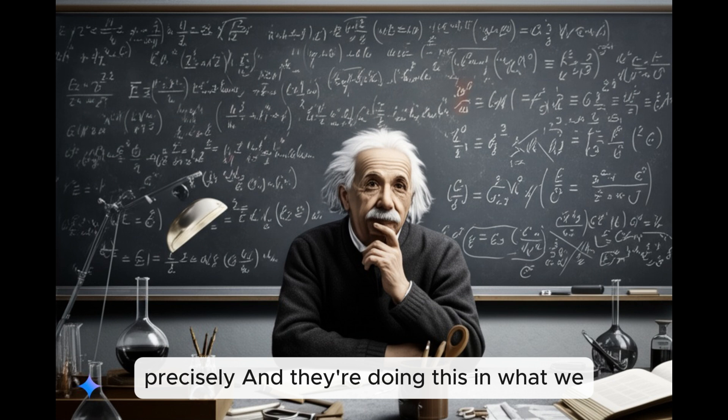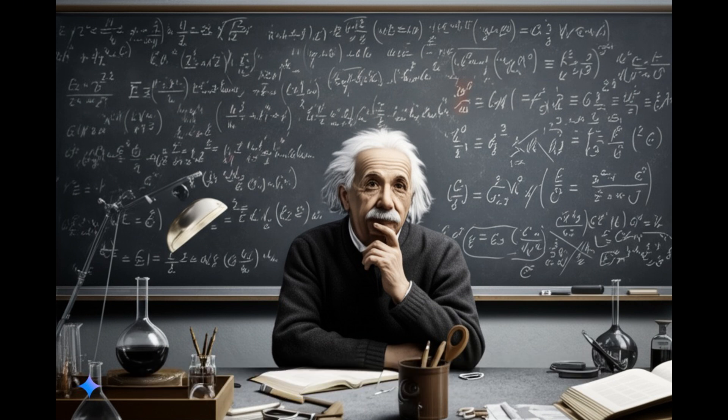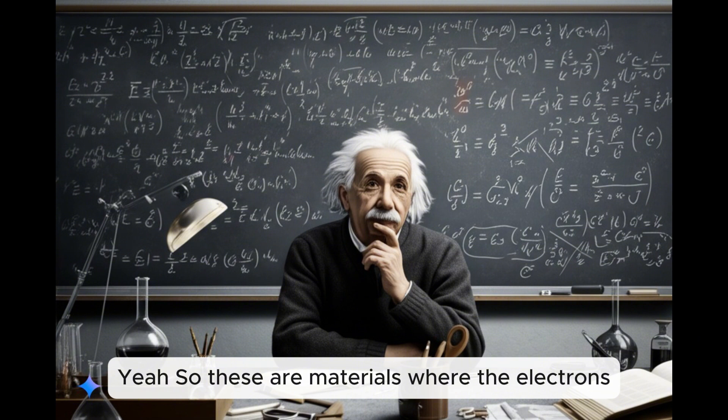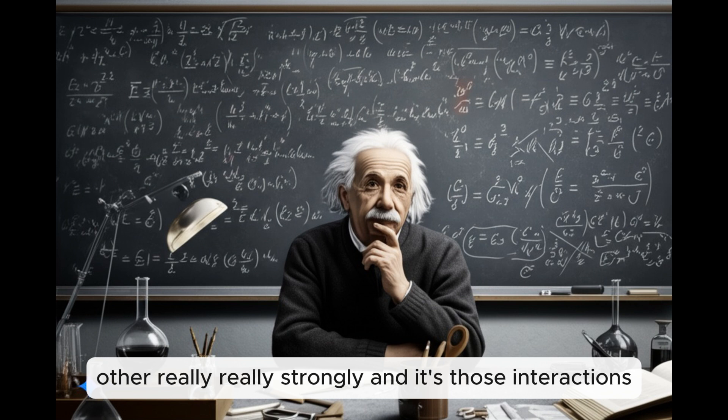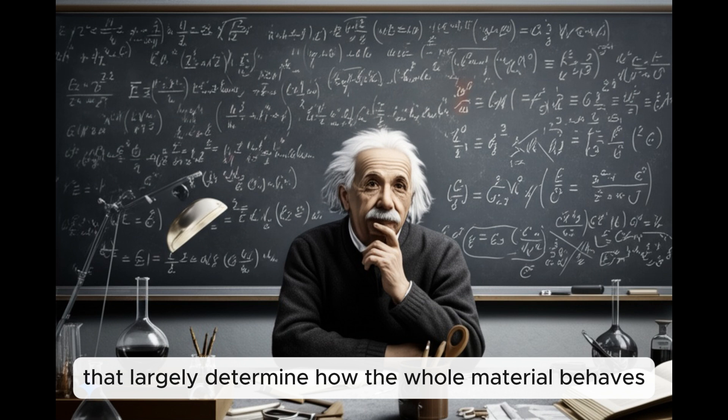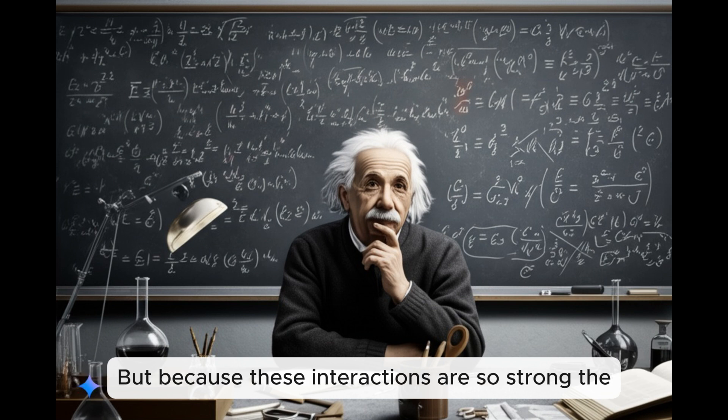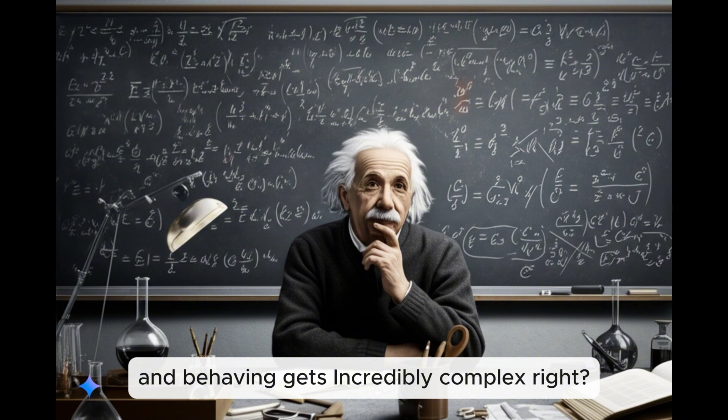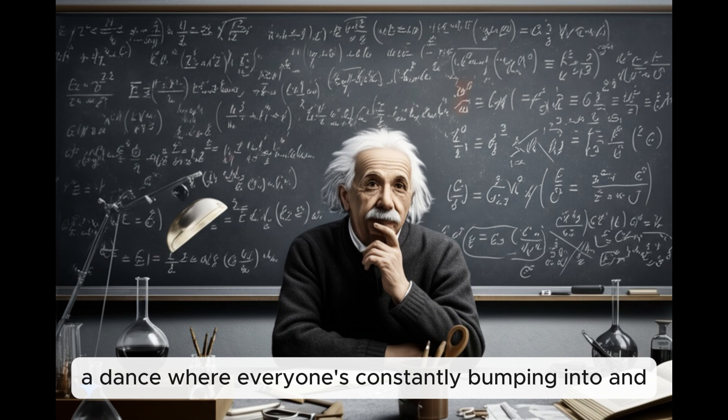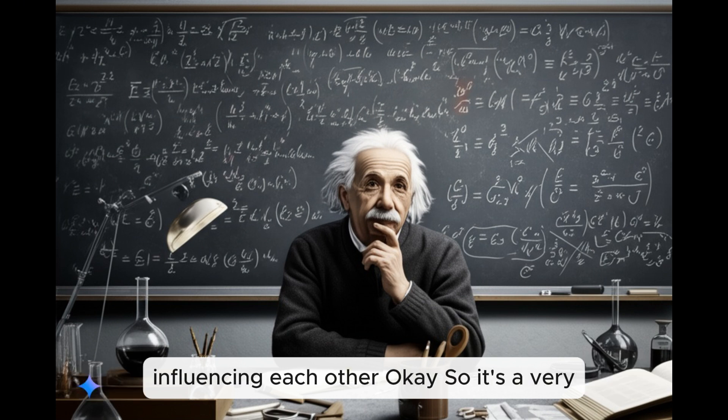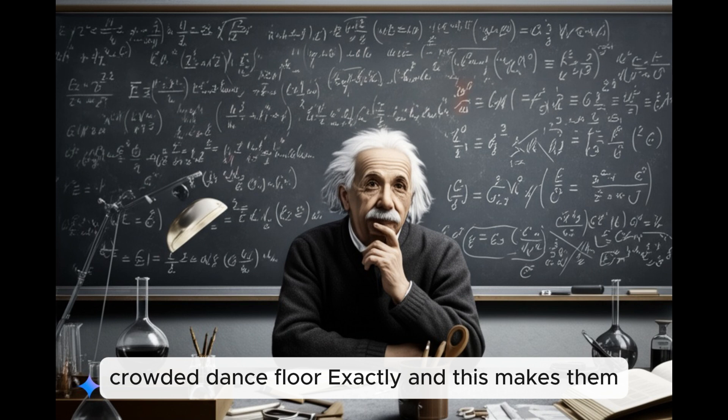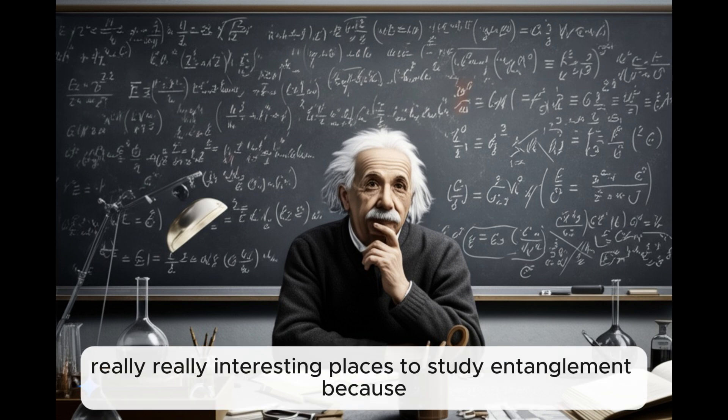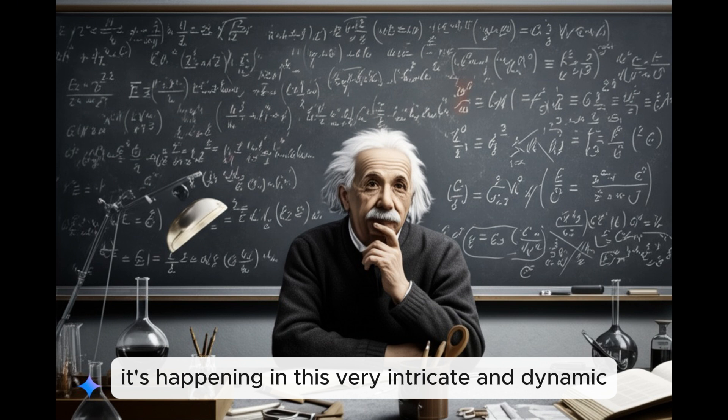So instead of looking at the whole forest, they're looking at a single tree and the immediate ecosystem around it. Precisely. And they're doing this in what we call strongly correlated electron systems. That's a mouthful. What are those? So these are materials where the electrons, those tiny charged particles, are interacting with each other really strongly. And it's those interactions that largely determine how the whole material behaves.